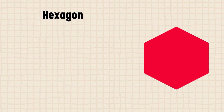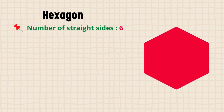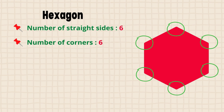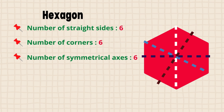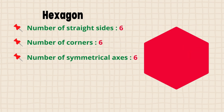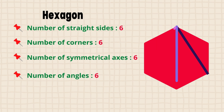Look at this polygon — this is a hexagon. It has six straight sides, six corners, six symmetrical axes, six angles, and nine diagonals.